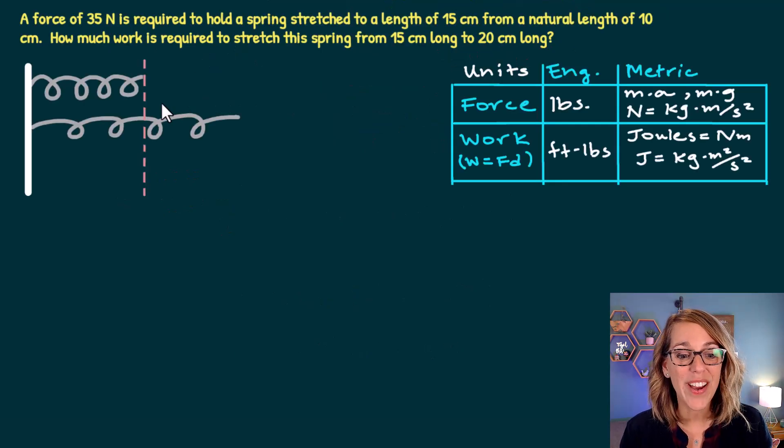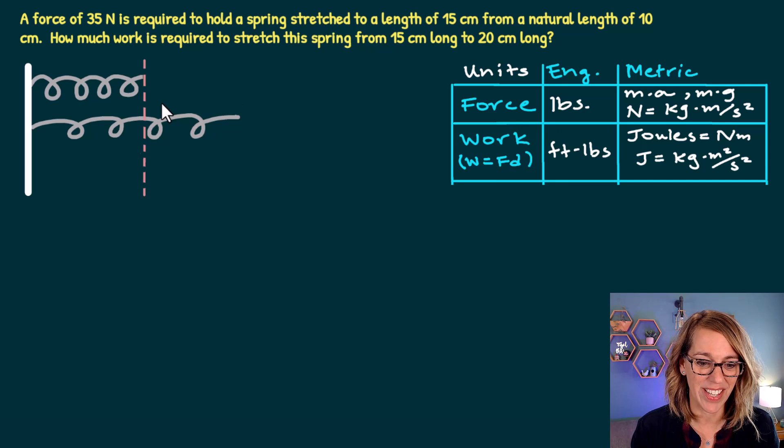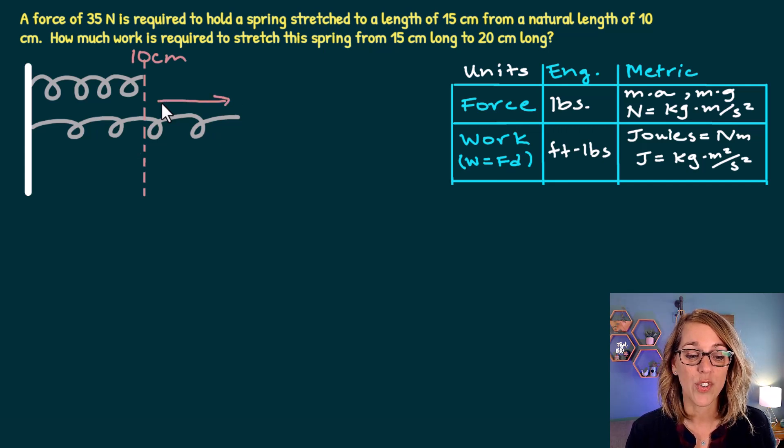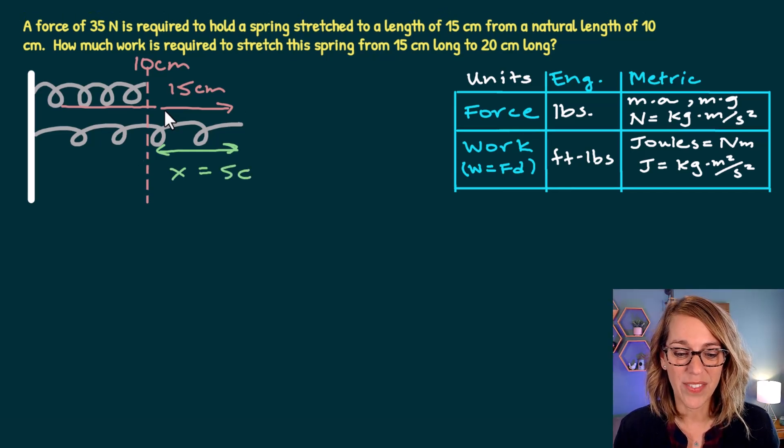In this next example, we are given this comparison. It takes 35 newtons to hold a spring to a length of 15 centimeters from a natural length of 10 centimeters. Let's go ahead and label some of these things here. So 10 centimeters is my natural length, and it takes 35 newtons to get us stretched to a total length here of 15 centimeters. The distance that we're looking for is that difference. So how far has it been stretched from the natural length? That's our x value, which in this case, 15 minus 10 is going to equal 5. This distance of 5 is 5 centimeters.